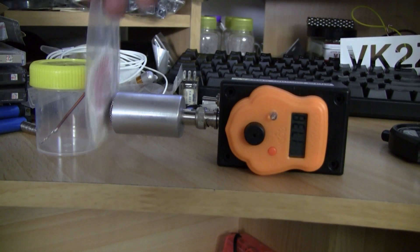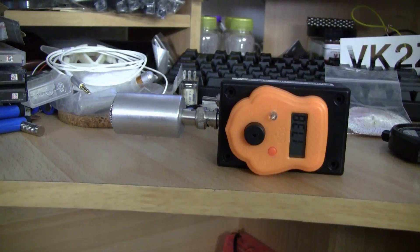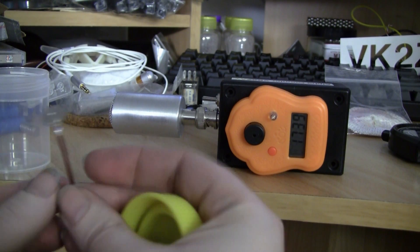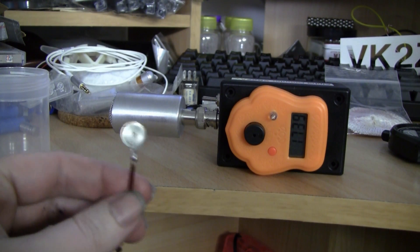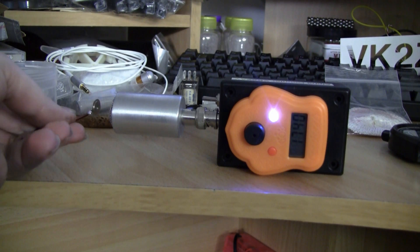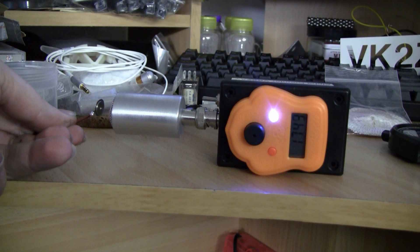Alrighty, let's try a stronger source. This is the old americium source from a smoke detector. The DC levels take a moment to adjust. As you can see it's actually producing probably more counts than the device can respond to.